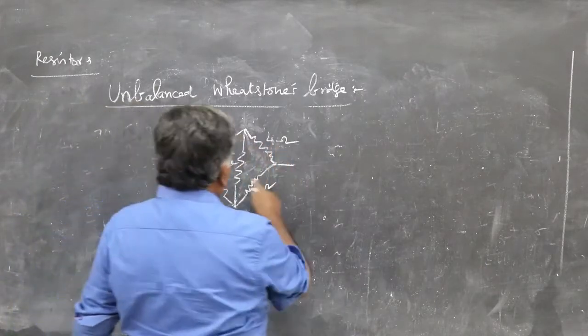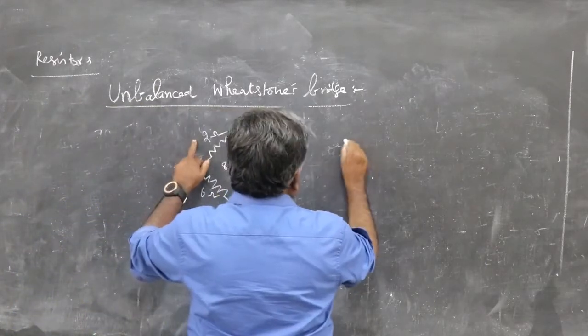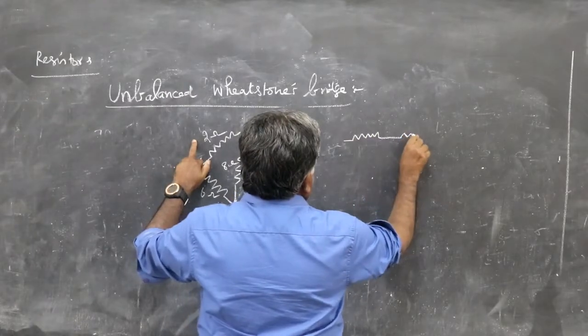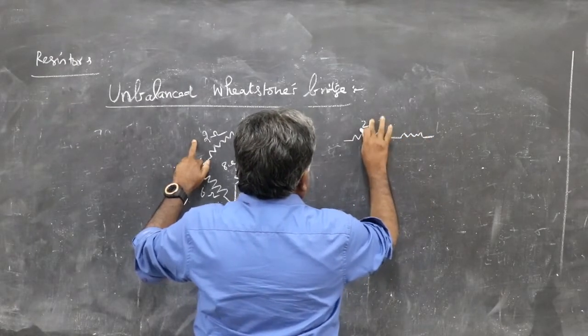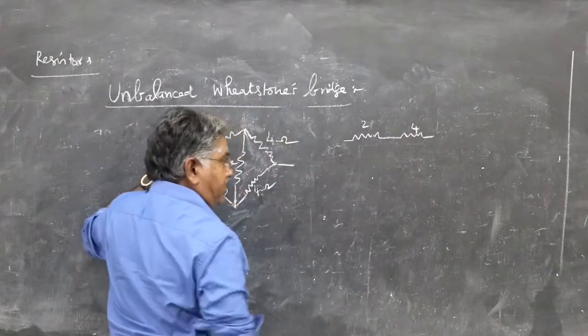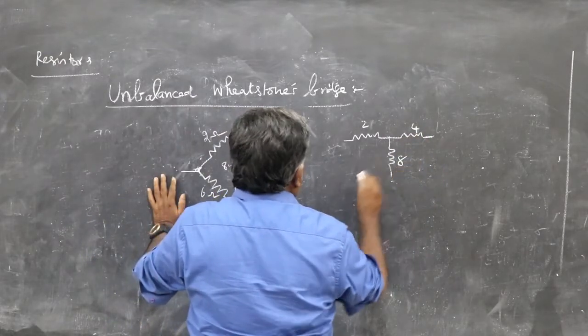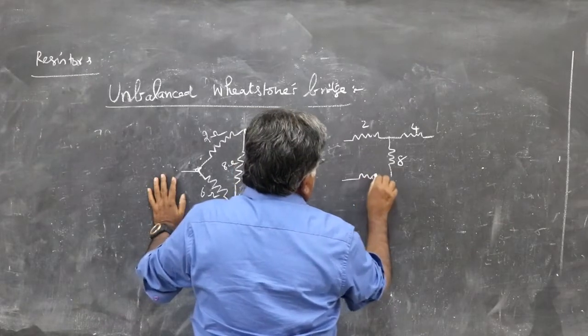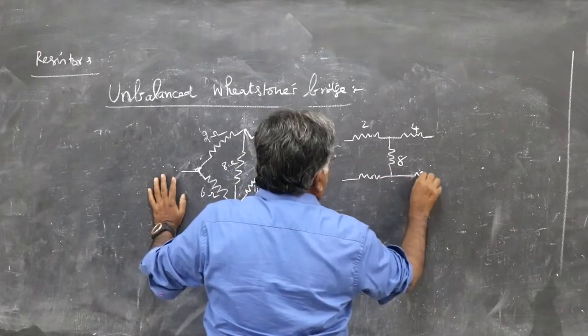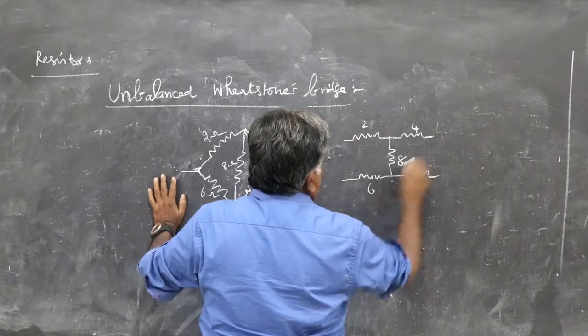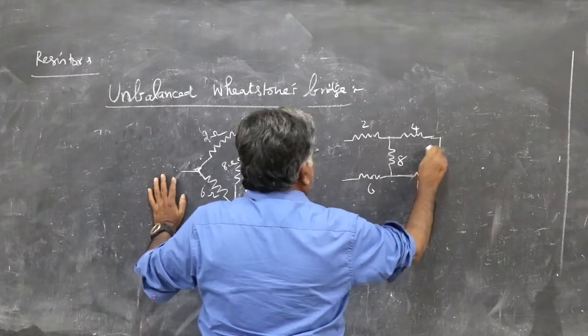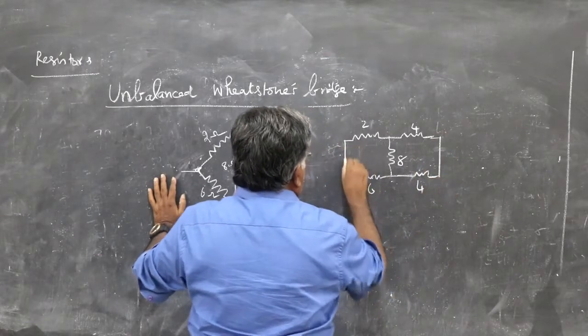For that, it's better you redraw it this way: 2 ohm, 4 ohm. Note that all resistors are in ohms, I am not writing ohms here. This is 8, this is 6, this is 4, goes here.